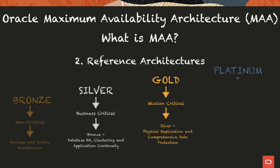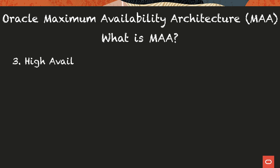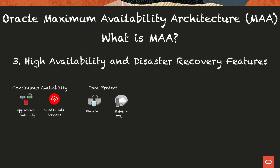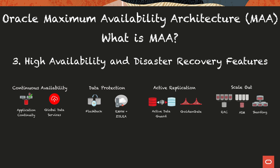And finally, Platinum, which is for extreme critical environments and provides logical active-active replication and advanced HA options such as sharding and edition-based redefinition. These reference architectures use high availability and disaster recovery features that provide continuous availability, data protection, active replication, and scale-out capabilities.